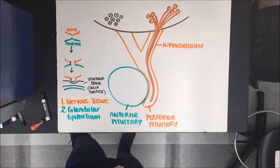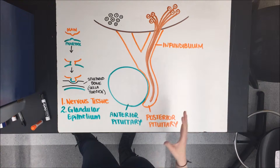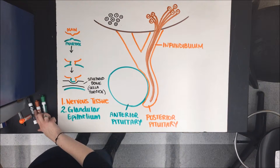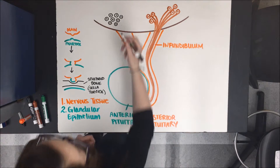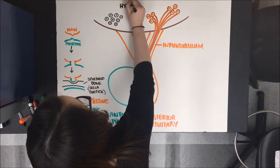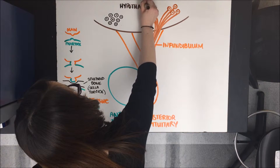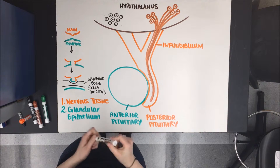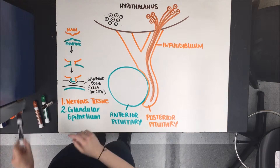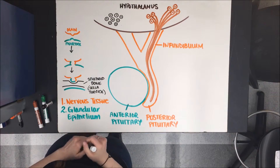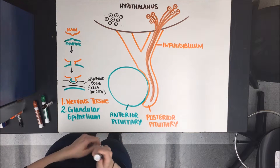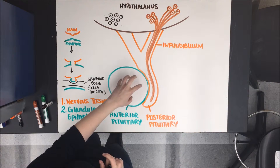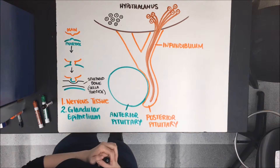Next we're going to talk about the hormones — where they're produced, where they're released, and how it all comes together. The portion of the brain that the pituitary is connected to is the hypothalamus. The hypothalamus actually contains cells which produce hormones — I've drawn this group of cells in black. They produce releasing and inhibiting hormones that in turn control what is released in the anterior pituitary.